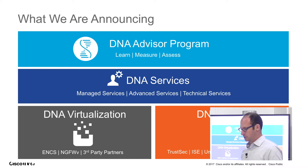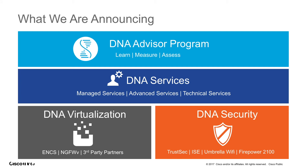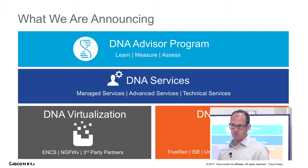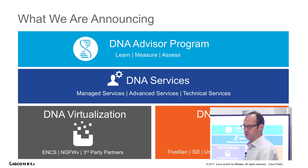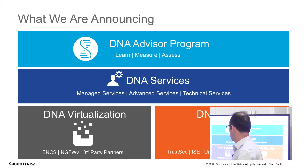We have two product innovations launched yesterday. One is around security — with enhancements in our ISE product with a new release, TrustSec, and our Umbrella services now extended to Wi-Fi. We already have it on our routers; now we also have it in Wi-Fi, with OpenDNS solutions for users accessing Wi-Fi and enhancements with our Firepower 2100. The second part of the enhancement was around DNA virtualization, which is the topic for today.